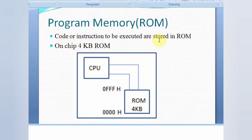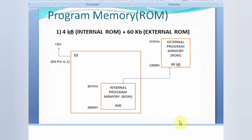Code or instructions to be executed are stored in ROM. The on-chip ROM is 4 kilobytes and its address range is from 0000H to 0FFFH. Now for this program memory, if the internal memory is insufficient we need to connect external program memory or ROM. For this we use the EA pin of the 8051, which stands for external access pin.